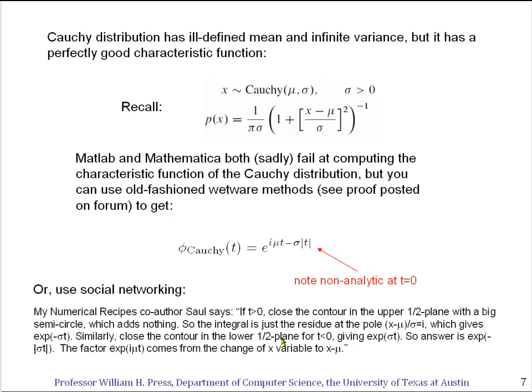Similarly, you close the contour in the lower half plane if t is less than zero, giving e to the plus sigma t.